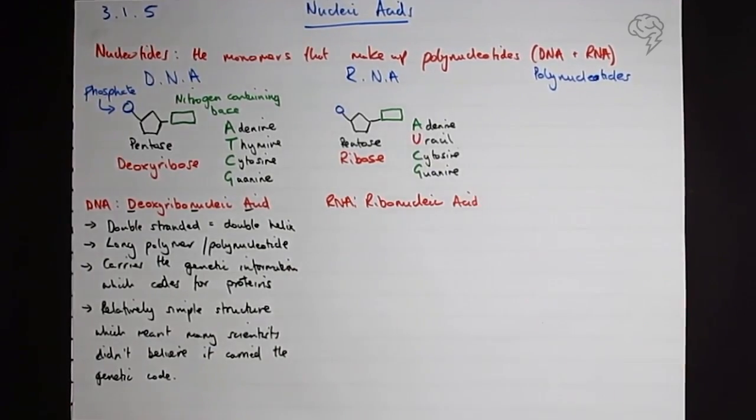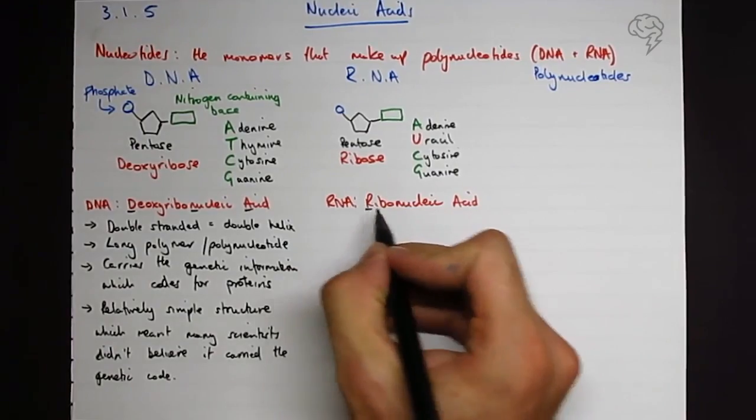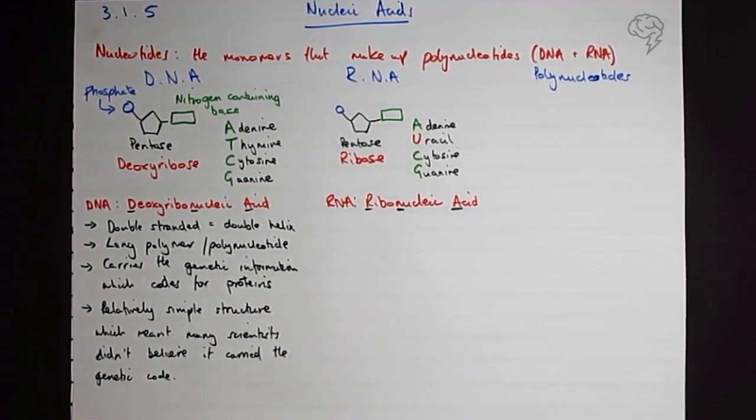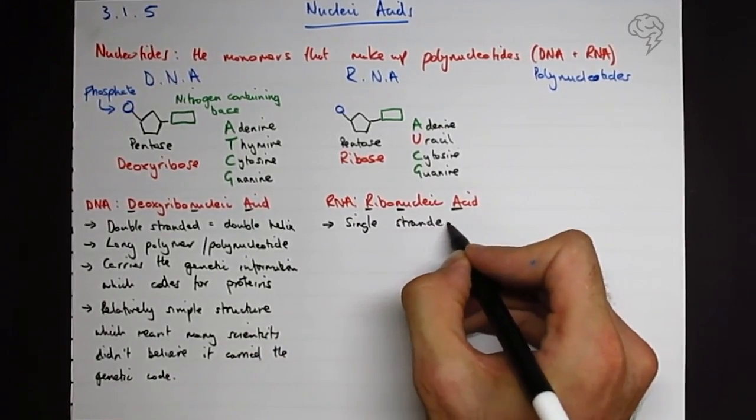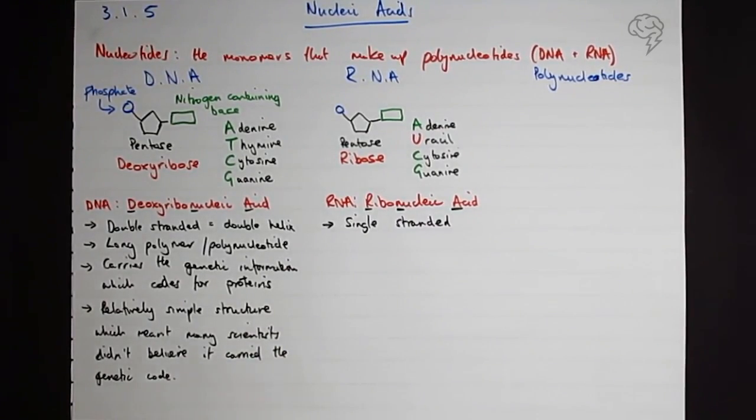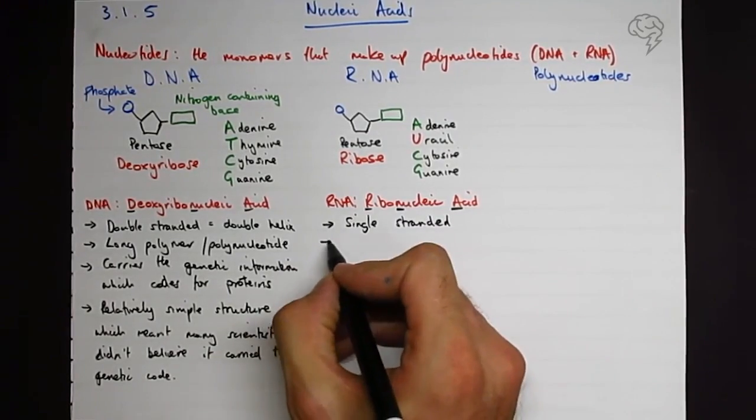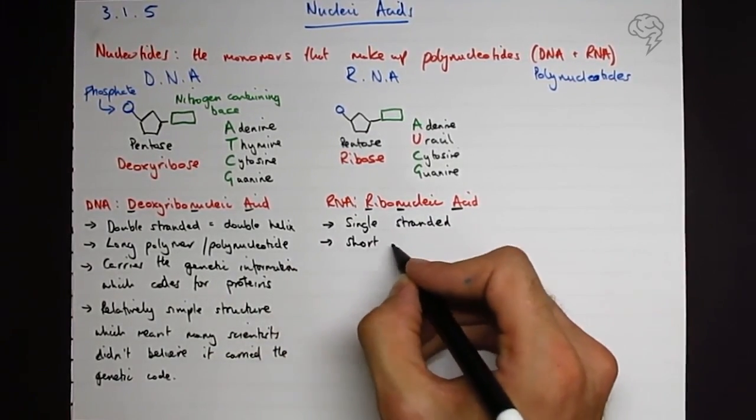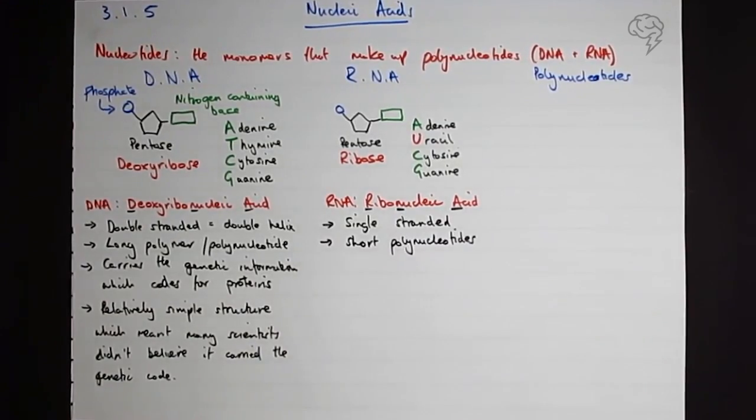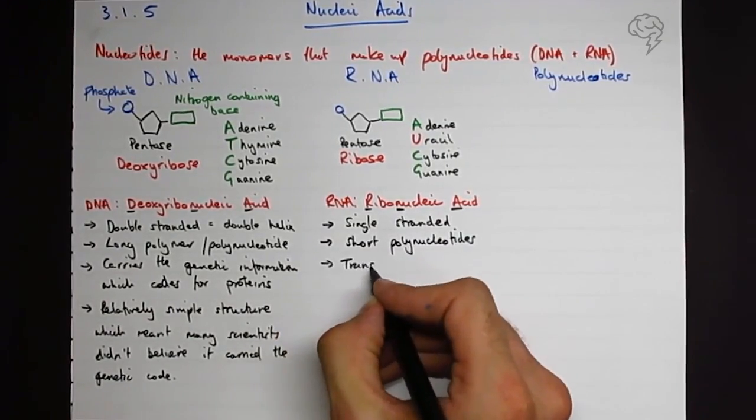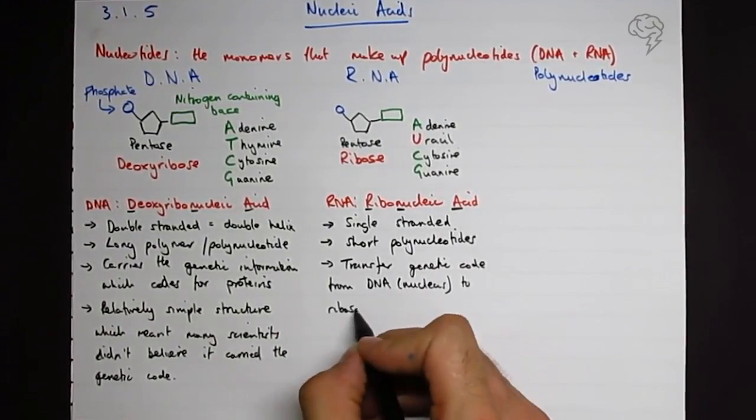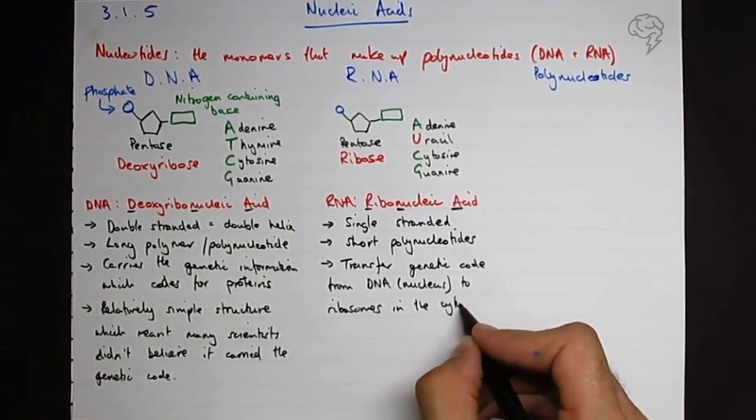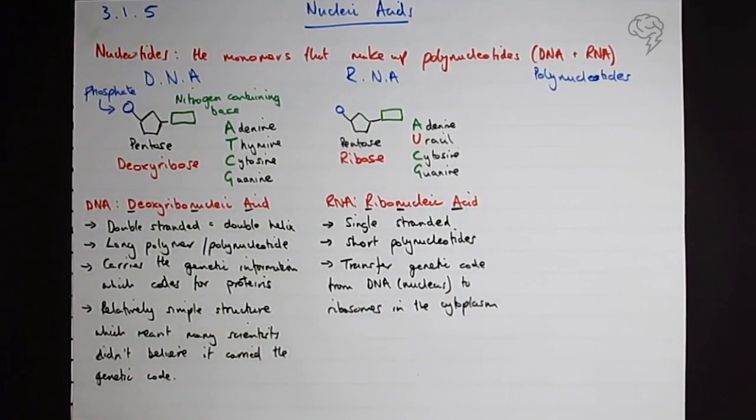What do we need to know about it? Well, it's single-stranded with very little exception. There are things called siRNAs but don't worry about those. Single-stranded, they're short polynucleotides, so they're not as long. What do they do? They transfer genetic code from the DNA in the nucleus to ribosomes in the cytoplasm where they're translated into proteins. We're going to look at transcription and translation later in the course.